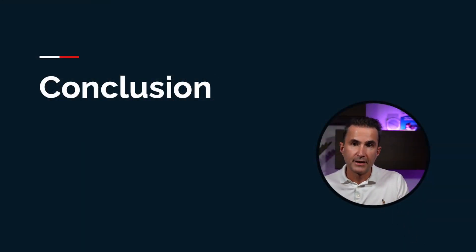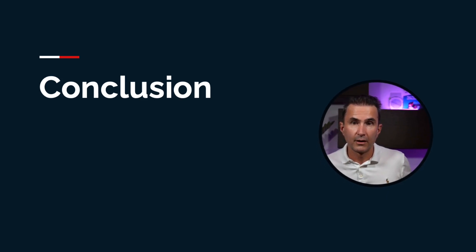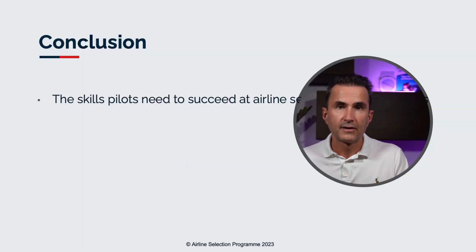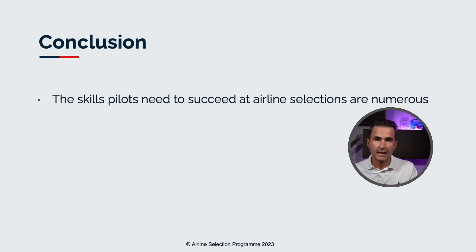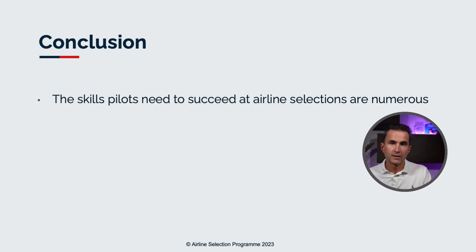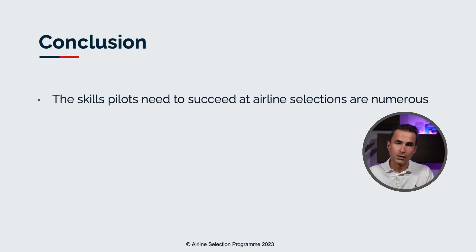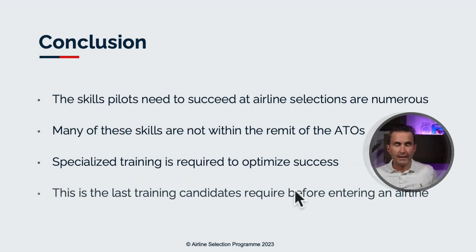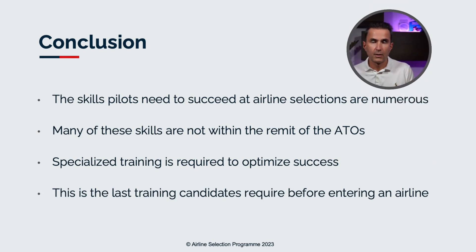To conclude this section: the skills pilots need to succeed at airline selections are numerous. Most candidates leaving flight school underestimate this. Flight schools focus on getting your license — very few give you all the tools you need to get a job, and it's not really part of their remit. The responsibility of teaching yourself how to pass a selection falls on you. Specialized training is required to optimize your success. This is the last investment you'll need to make before entering the airline — you've done so much work for so long, and this is the final step to convince the airline that you mean business and know your stuff.